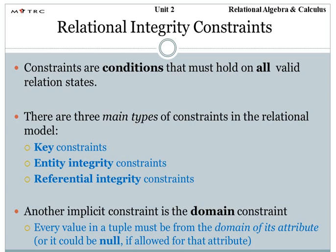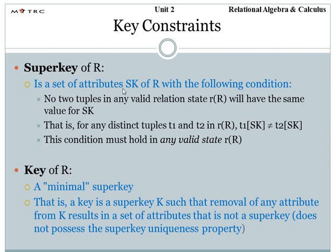The next important point is the relational integrity constraint. Up till now we have discussed the introduction to the relational model — tuples, values, attributes, domain, relational schema, and relation state. Constraints are certain conditions or restrictions that must be valid whenever there is a relation state. We have three main types of constraints in the relational model: key constraint, entity integrity constraint, and referential integrity constraint. There is also a domain constraint — every value in a tuple must be from the domain of the attribute.